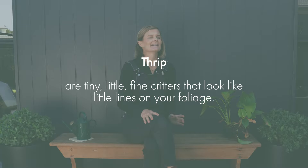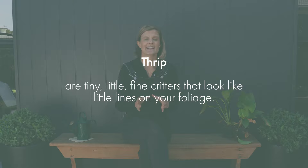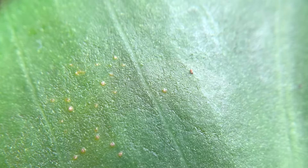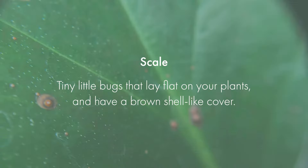Thrips are tiny little fine critters that often look like little lines on your foliage. They come in all different colours — brown, yellow, black. They tend to poke little holes in the leaves and suck the juices from the leaf as well. Be on the lookout for a brown streak, a silvery speckling and small mottled white patches. Thrips also spread viruses, so don't leave them hanging around for too long.